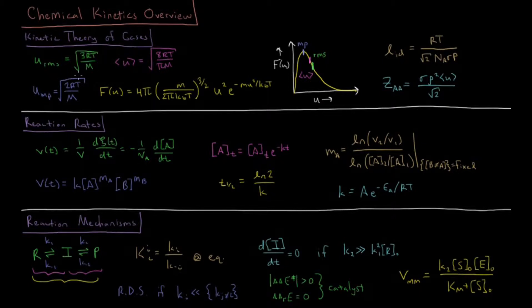And we derive things like that the average velocity is equal to square root of 8RT over pi times the molar mass of the gas particle.